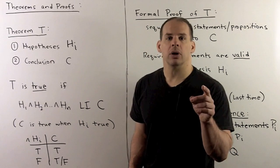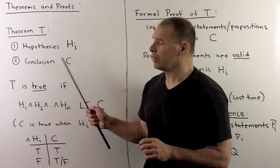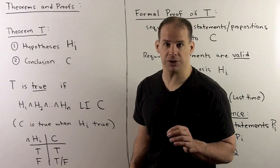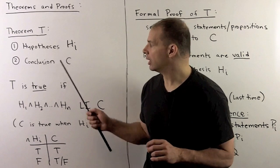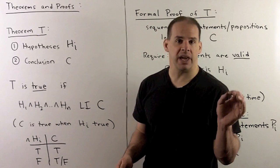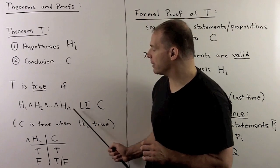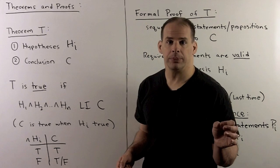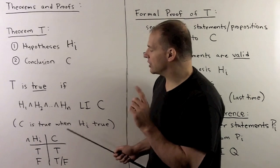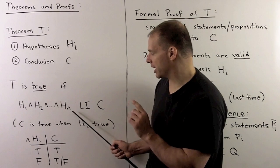For a proof, we're going to go from the hypotheses to the conclusion by setting up a string of logical equivalences or logical implications. We'll say the theorem T is true if the statement H1 and H2 and H3 up through Hn logically implies C. Logical implication just means that C is true whenever all of the hypotheses are true at the same time.